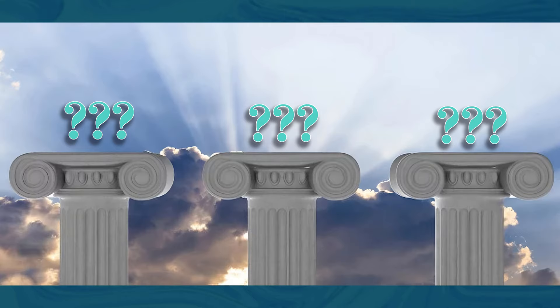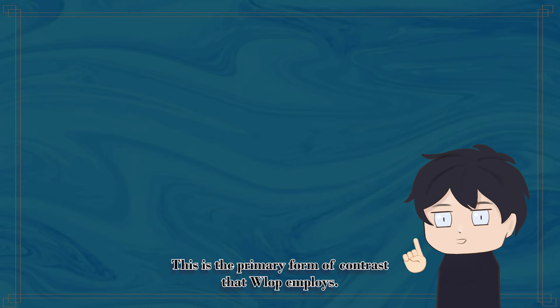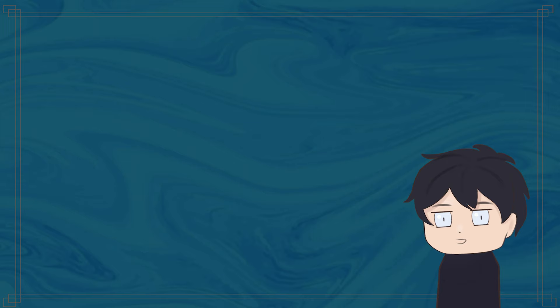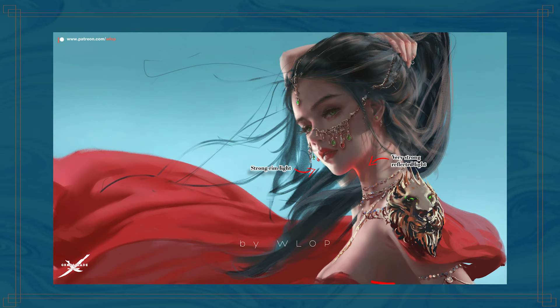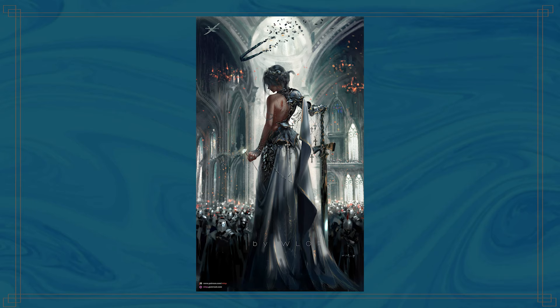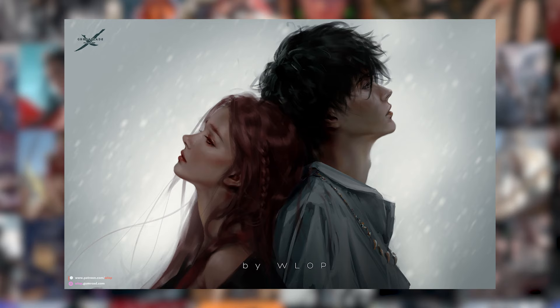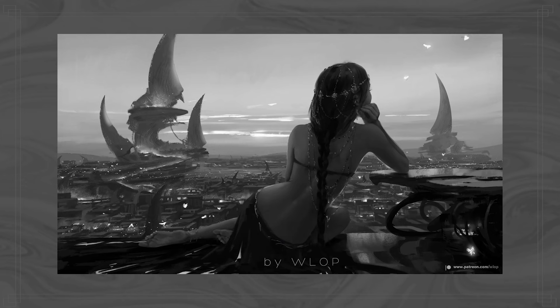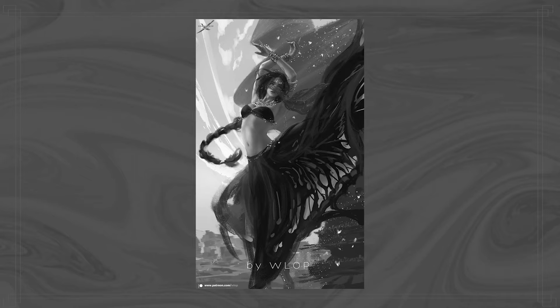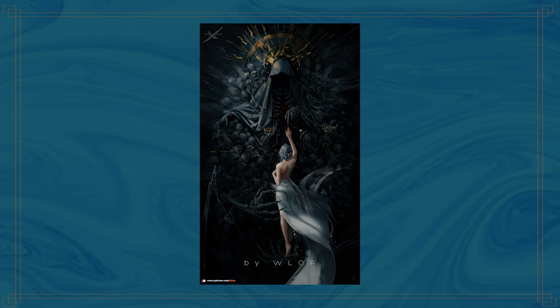The first of these is value contrast — this is the primary form of contrast that Wallop employs. By value contrast, I'm not just talking about a wide range of defined shadows and highlights, though that is indeed something that Wallop does and is very important. The key point is how Wallop strategically emphasises his focal elements by positioning them against a background with a vastly different value. If we go to any of his paintings, he uses this in every single one. If we turn them to grayscale, you'll easily see the prominent use of value difference between subject and background. Wallop loves to either frame a bright subject on a dark background, or a darkened subject on a bright background.